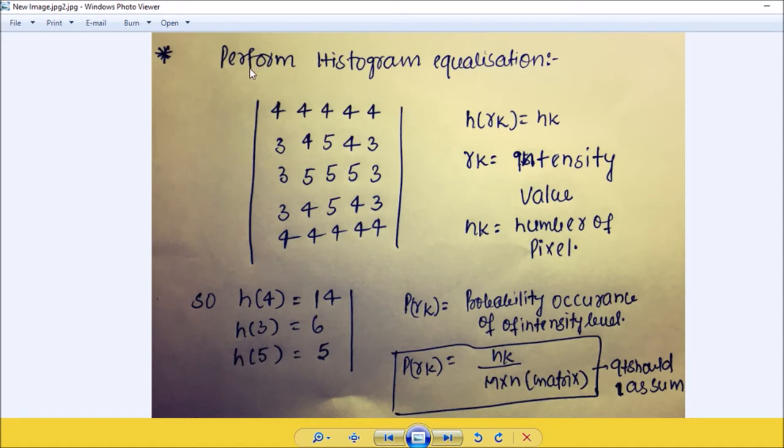h(rk) = nk, where rk is nothing but intensity value and nk is the number of pixels. So h(4), the number of occurrence of 4 is 14, and the number of occurrence of 3 is 6, and the number of occurrence of 5 is 5 in this 5 by 5 matrix.